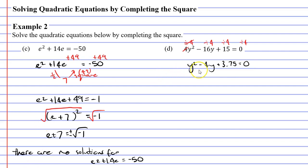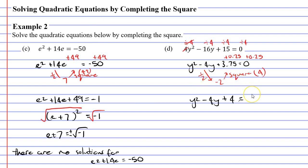Is this a perfect square? Let's check. Let's start by halving the negative 4, which gives us negative 2. And then we square the negative 2, which gives us 4 — negative 2 times negative 2 is 4. We're close but slightly off; we needed an extra 0.25 to make it 4. So we'll add 0.25 to both sides of the equal sign. y squared minus 4y: 3.75 plus 0.25 gives us plus 4. So we now have a perfect square to the left of the equal sign, and 0 plus 0.25 is 0.25 on the right.